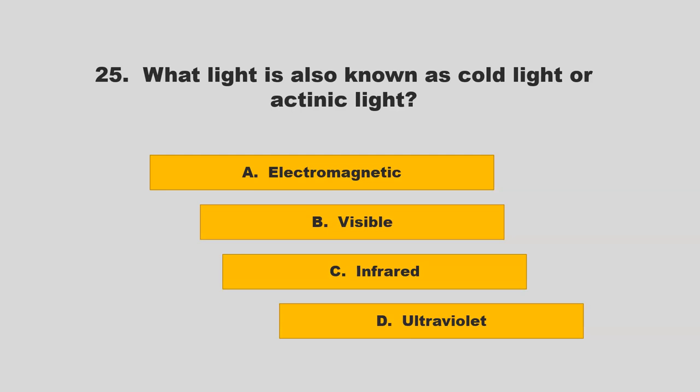What light is also known as cold light or actinic light? Is it electromagnetic, visible, infrared, or ultraviolet? If you chose D, ultraviolet, you are correct.